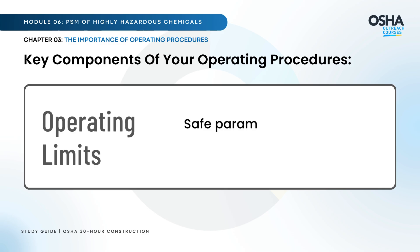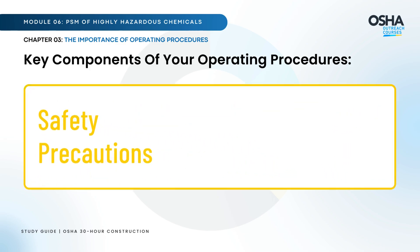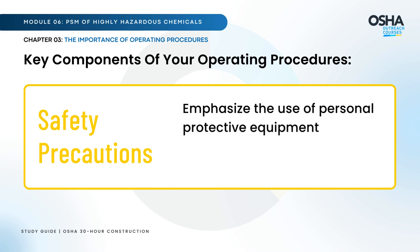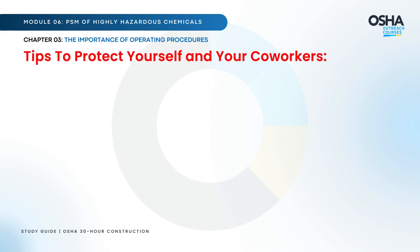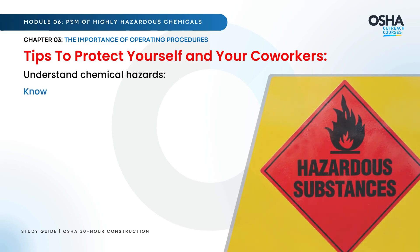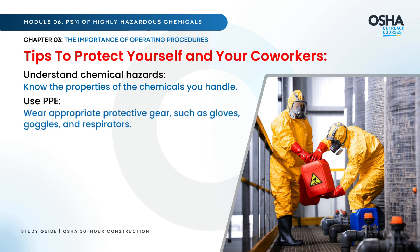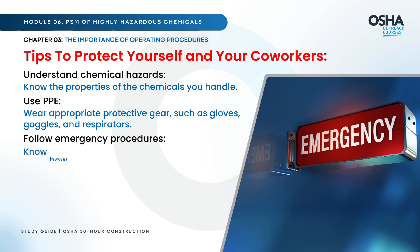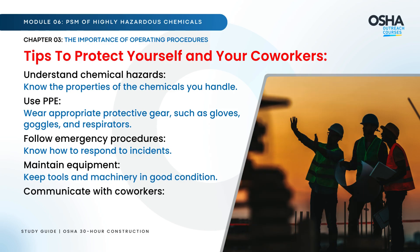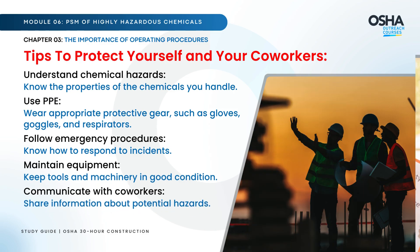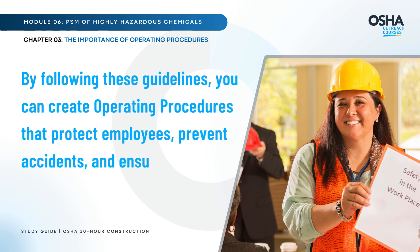Operating limits define safe parameters for equipment and chemical use. Safety precautions emphasize the use of personal protective equipment (PPE) and emergency response equipment. Key tips to protect yourself: understand chemical hazards — know the properties of chemicals you handle. Use PPE — wear appropriate protective gear such as gloves, goggles, and respirators. Follow emergency procedures, maintain equipment in good condition, and communicate with co-workers about potential hazards. These guidelines help prevent accidents and ensure a safe work environment.